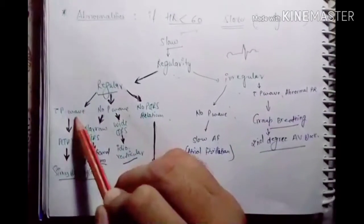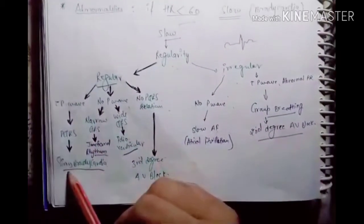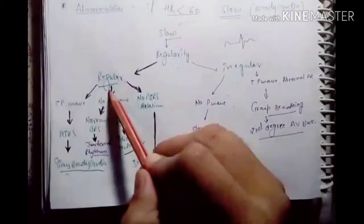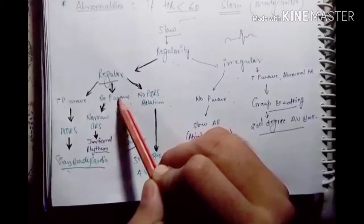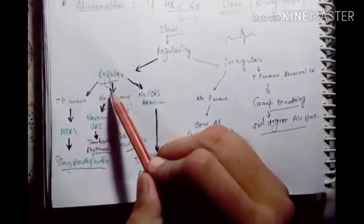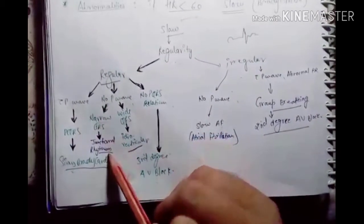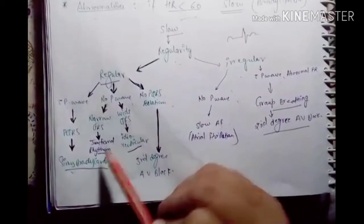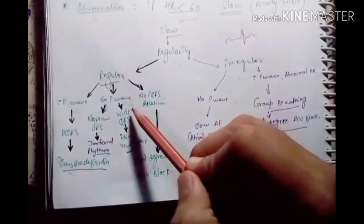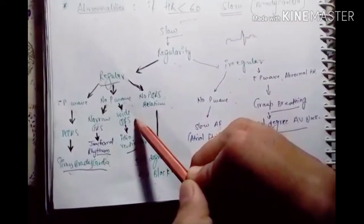Here we see if it's regular with the P wave and PQRS present, we consider sinus bradycardia. If there is no P wave and narrow QRS complex, we consider junctional rhythm. If there is no P wave and the QRS is wide, we consider idioventricular rhythm.